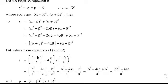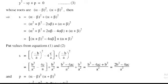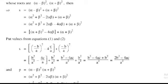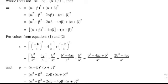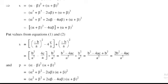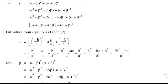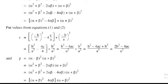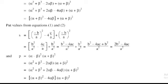Next, product of roots P = (α − β)² × (α + β)². Opening the square: (α − β)² = α² + β² − 2αβ. Adding and subtracting 2αβ gives (α + β)² − 4αβ. So P = [(α + β)² − 4αβ] × (α + β)².